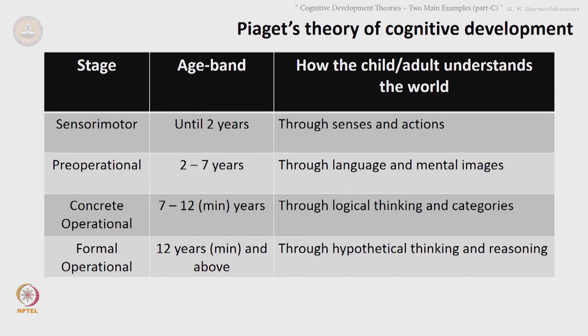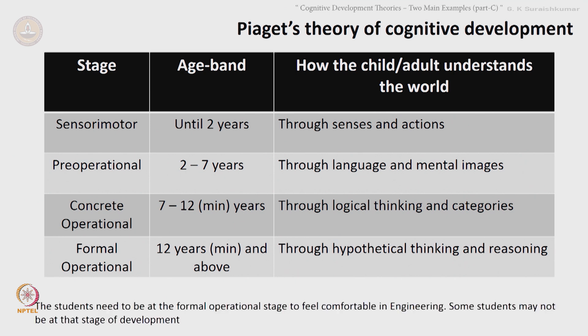To summarize: the sensory motor stage is until about two years — the child understands the world through senses and actions. The pre-operational stage is two to seven years, where understanding of the world is through language and mental images. The concrete operational stage is seven to twelve years — some adults could also be in this stage — where understanding is through logical thinking and categories. The formal operational stage is the final stage, where understanding of the world is through hypothetical thinking and reasoning. Students need to be at the formal operational stage to feel comfortable in engineering; some students may not be at that stage, and we could help them make the transition.